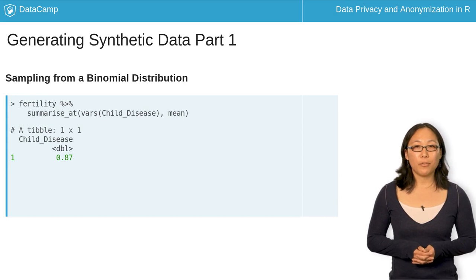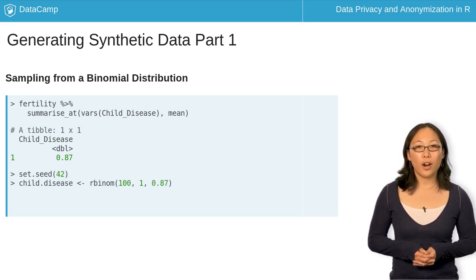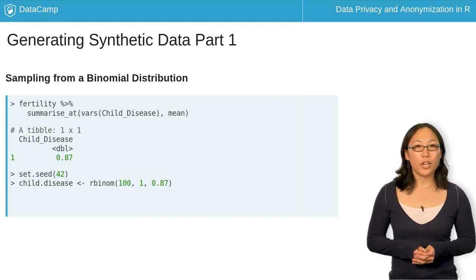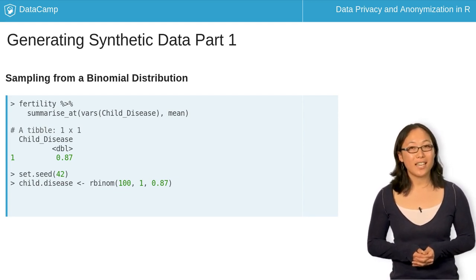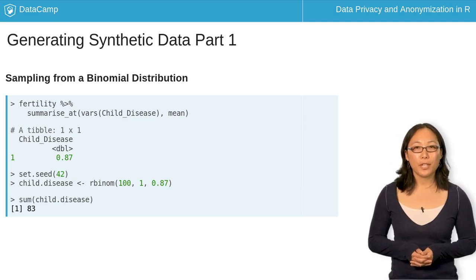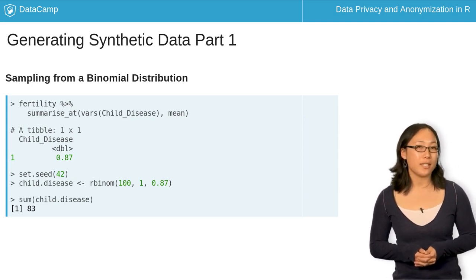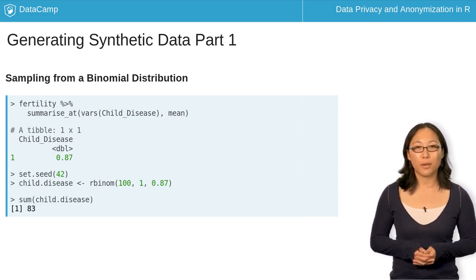You can now sample from a binomial distribution by using the function rbinom. You will generate 100 samples, set the size to 1, and use 87% as your probability. From this, you can create a synthetic dataset where the proportion of participants who had a childhood disease is now 83%.